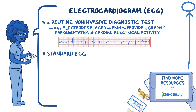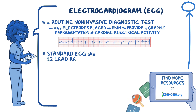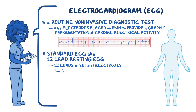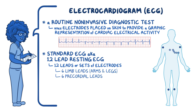The standard ECG is also known as a 12-lead resting ECG because it has 12 leads or sets of electrodes. These include 6 limb leads, placed on the arms and legs, and 6 precordial leads, placed around the chest. Keep in mind that a 12-lead ECG only uses 10 electrodes, because the chest electrodes record 1 lead each, while the limb electrodes together actually record 6 leads.